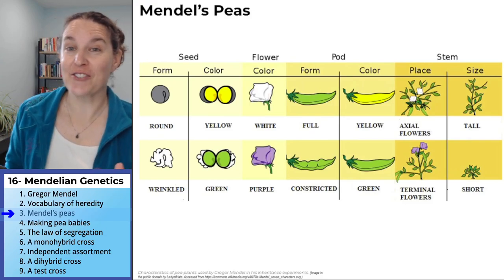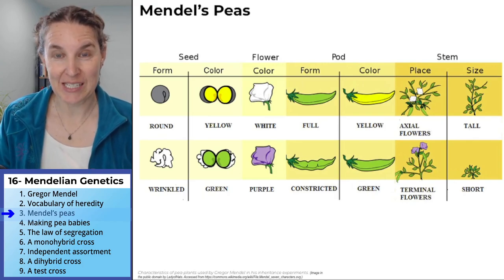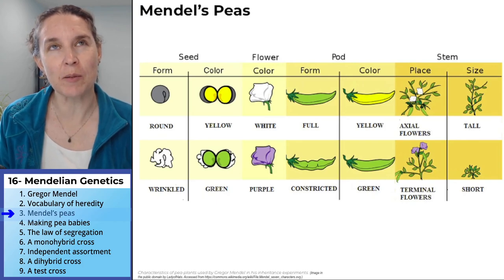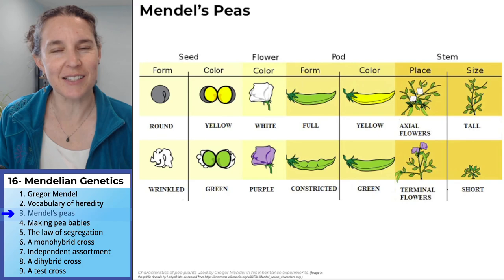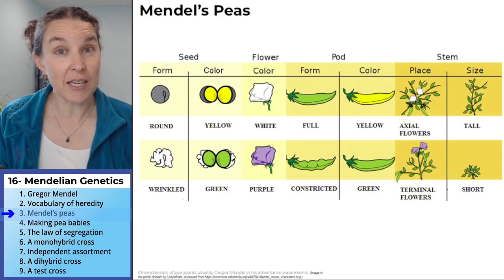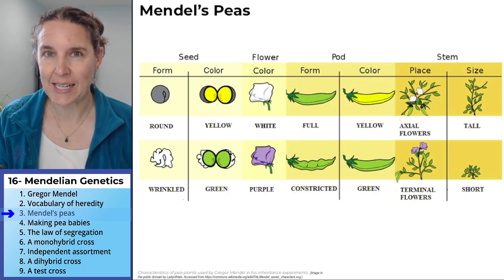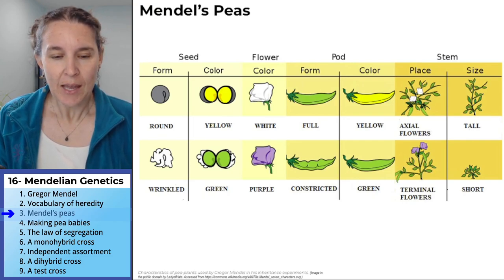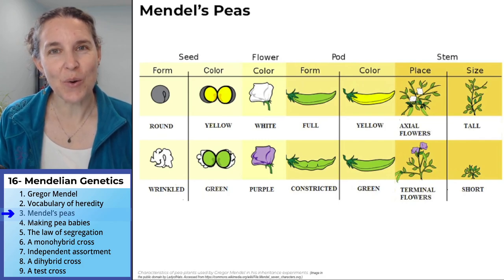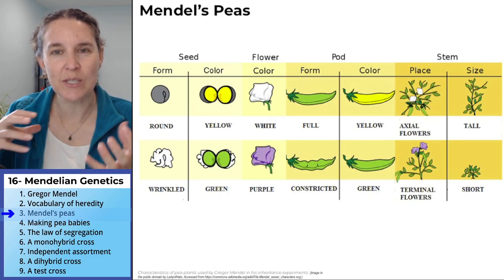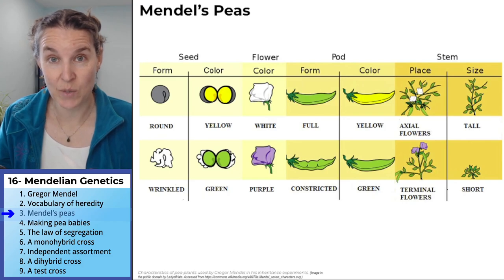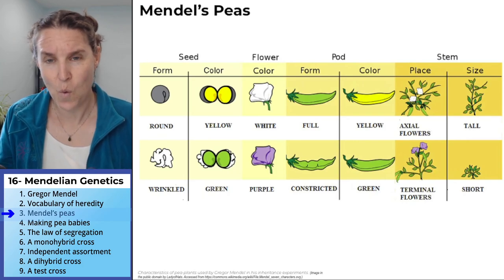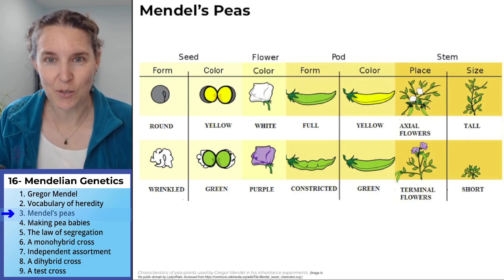Seven characteristics that Mendel looked at in peas. We should name the fact that Mendel pretty much either hit the jackpot — he either was the luckiest human on the planet, or he didn't actually report out all his data. He was a monk, so he didn't have his fingers in the actual scientific dialogue. It wasn't until after he died that people started looking at his research and going, 'Wait a minute, this is important research.'